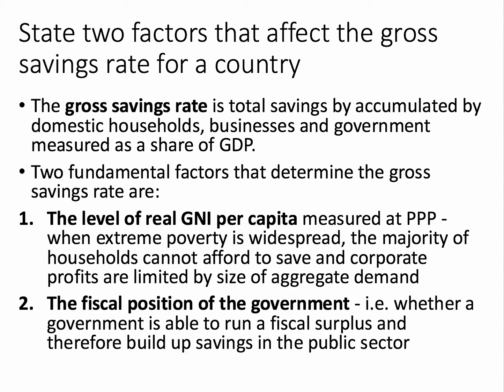What are two factors that can affect the gross savings rate for a country? The gross savings rate is total savings accumulated by agents in the economy — households, businesses, and government — added together and expressed as a share of GDP. The first factor is the level of income per capita adjusted for purchasing power parity. For many lower and middle income countries, there's a high level of extreme poverty and therefore the majority of households cannot afford to save, so the savings rate tends to be limited.